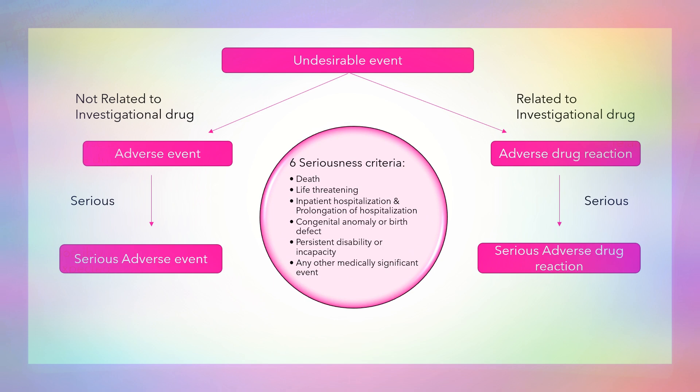What are the criteria for seriousness? There are six criteria. An event is described as serious when it results in death, is life-threatening, requires inpatient hospitalization or prolongation of hospitalization, involves congenital anomaly or birth defect, persistent disability or incapacity, or any other medically significant event.